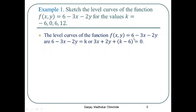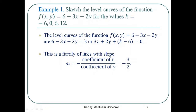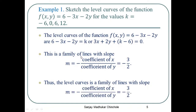The level curve of the function f(x, y) = 6 − 3x − 2y gives us 6 − 3x − 2y = k. Shifting all terms to one side, we get 3x + 2y + (k − 6) = 0. If we observe this equation carefully, it is of the form ax + by + c = 0, which represents a straight line. Therefore, all these level curves are straight lines with slope m = −(coefficient of x)/(coefficient of y) = −3/2. Thus, the level curves form a family of lines with slope m = −3/2.